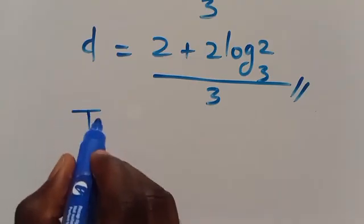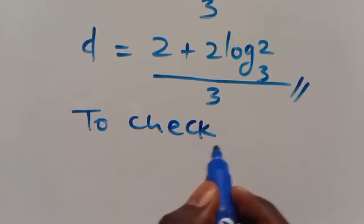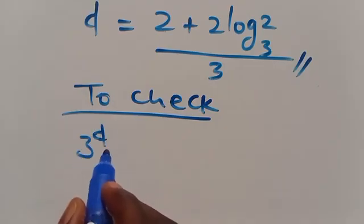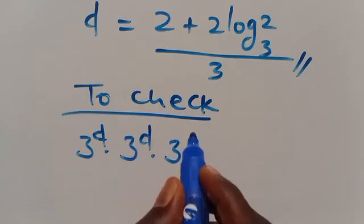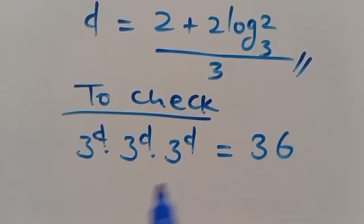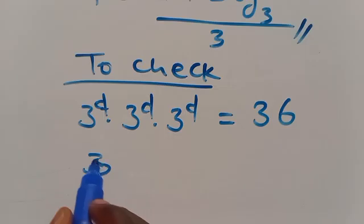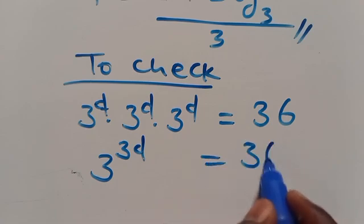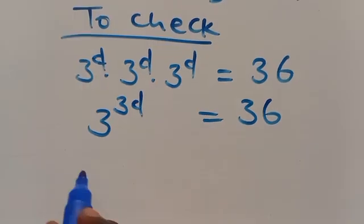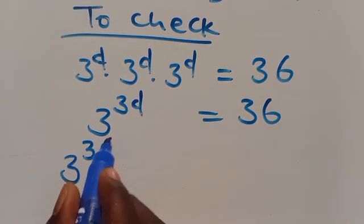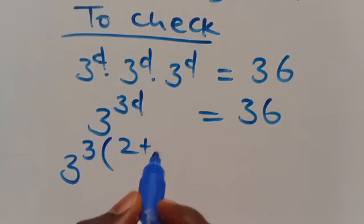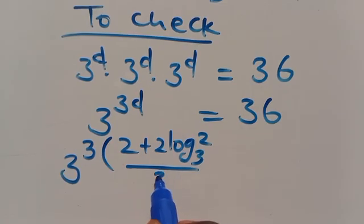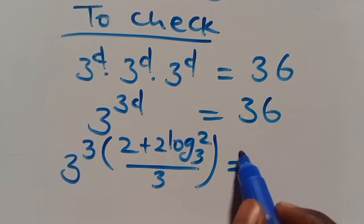To check, we substitute back into 3 to the power of D multiplied by 3 to the power of D multiplied by 3 to the power of D equals 36. From our simplification, this is 3 to the power of 3D equals 36. So 3 to the power of 3D equals 3 to the power of (2 plus 2 multiplied by log₃2 divided by 3) times 3, and this should give us 36.